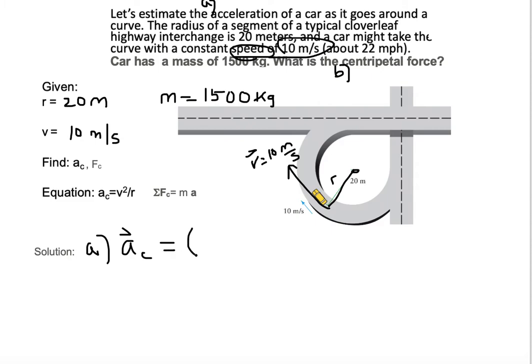All we need to do is plug in v, and it is 10 meters per second. And we need to square it. And then we need to divide by r, which is 20 meters.